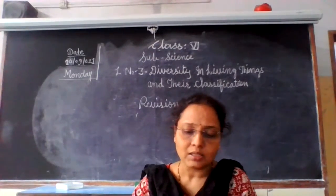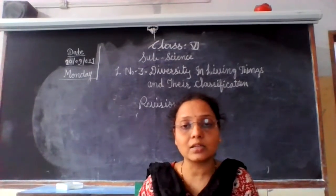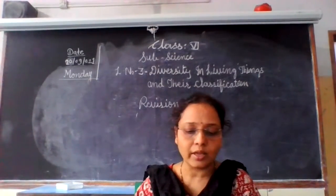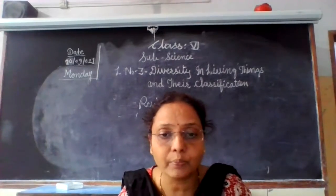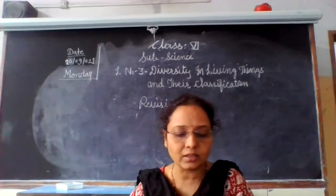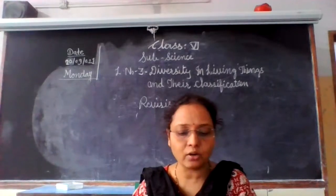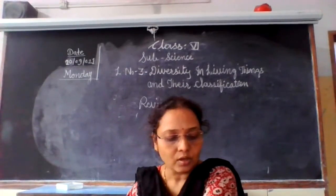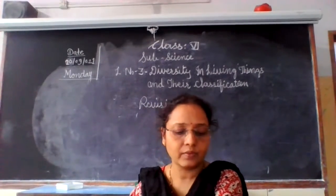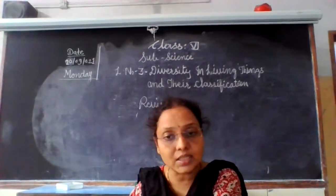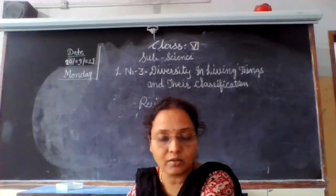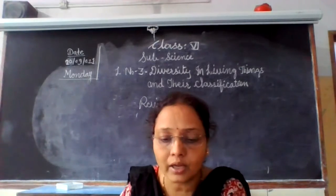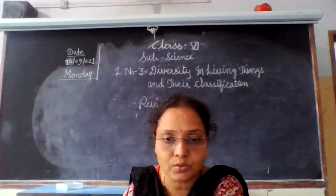Some plants, like fungi, are parasitic plants, and others are saprophytic plants. They do not prepare their own food because they lack chlorophyll and depend on other plants for their food — these are called heterotrophic plants. So there is diversity in each plant.